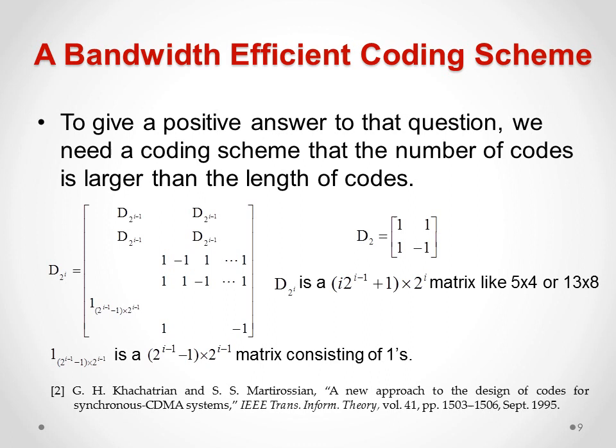Fortunately, such a coding scheme is available, and I employ this scheme from a paper published about 20 years ago in IEEE Transactions on Information Theory. As we see, this matrix contains those codings and can be generated recursively as shown here, starting from d2 = [[1,1],[1,-1]], and we see that the number of codes increases faster than their length as we grow the matrix.